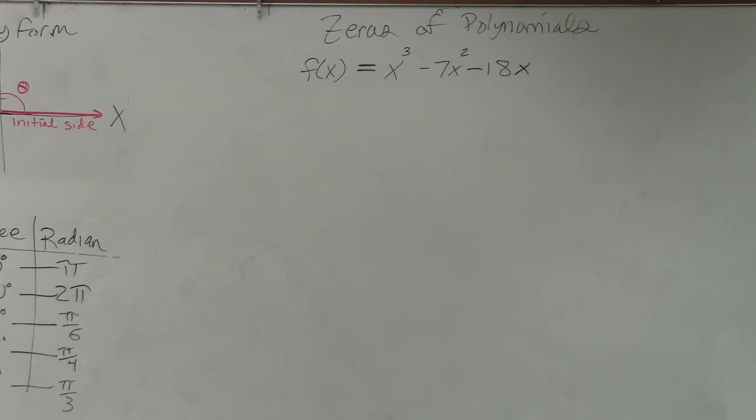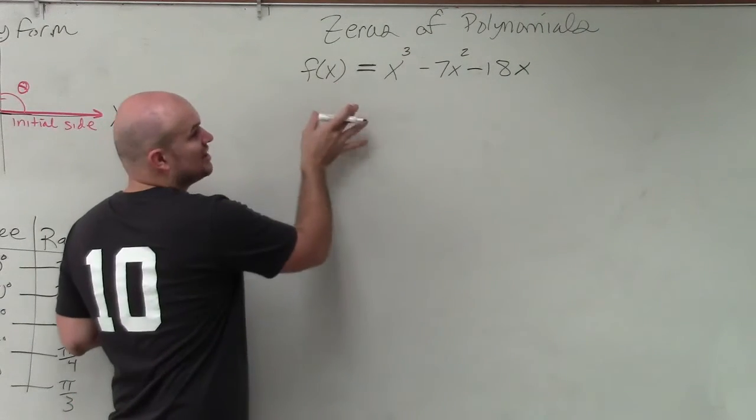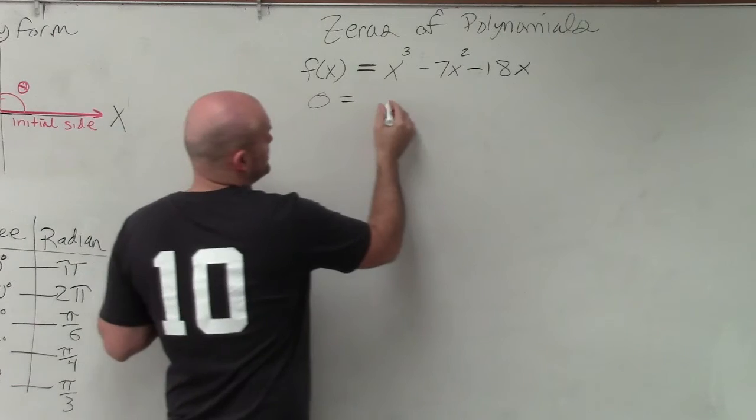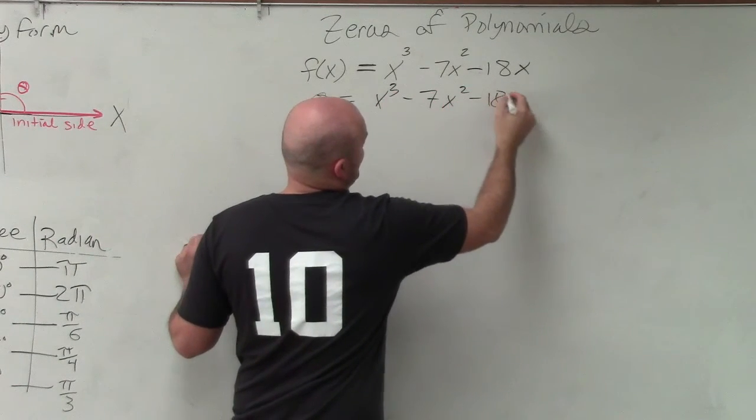So in this case, I see some issues with this. Ladies and gentlemen, first thing we do is set this equal to 0. So now we have x³ - 7x² - 18x.